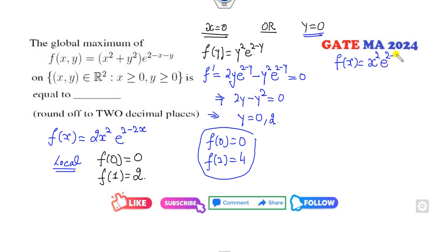Now since the function is symmetric, there is no need to solve this one. If you want to solve again, you can see the same function will appear. After that you will get (0,2), so that means f(0,2) equals 4.